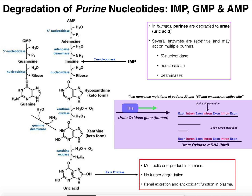Uric acid is not degraded any further in humans because, even though we possess a urate oxidase gene, the protein product is non-functional. In fact, the mRNA is mostly non-functional because we have a splice site mutation.